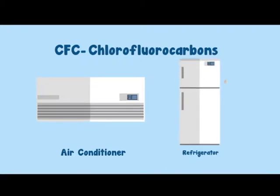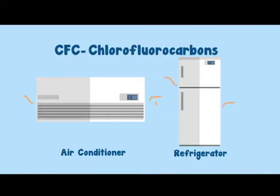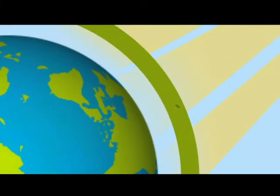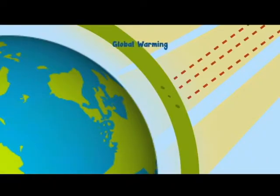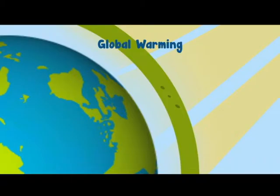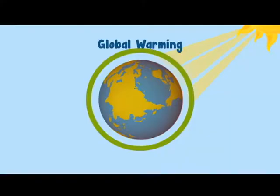Another greenhouse gas is CFC — chlorofluorocarbons. CFCs are chemicals widely used in air conditioners, refrigerators and other industrial processes, and they are also responsible for warming up the earth. Greenhouse gases like CFCs have also caused great harm to the ozone layer. The ozone layer protects us from the harmful ultraviolet rays of the sun. Scientists have discovered holes in the ozone layer — if this thinning continues, more of the sun's harmful ultraviolet rays will reach the earth. Greenhouse gases trap the sun's heat, causing the atmosphere to warm up. This warming is called global warming.